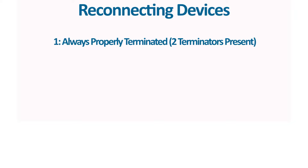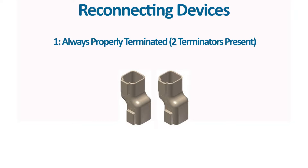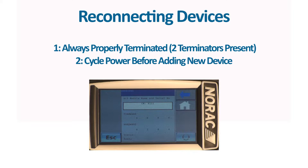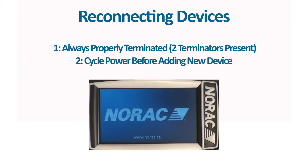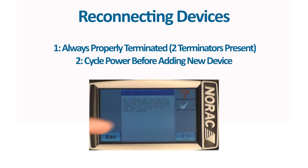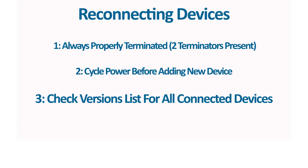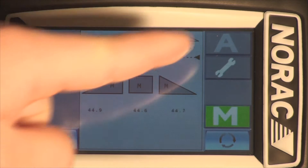There are three key things about this process. First, the system must always be properly terminated. Second, before a new device is added, the power must be cycled. And lastly, each time you add a device in, you must go back to the Versions list and check the communication status of all connected devices. A device may communicate when you first add it, but may not down the road, so it is vitally important to check all connected devices each time you add a new one on.